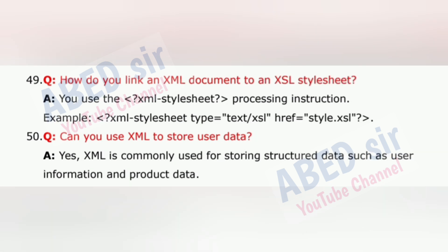Question 49: How do you link an XML document to an XSL style sheet? You use the XML stylesheet processing instruction. Example: <?xml-stylesheet type='text/xsl' href='style.xsl'?>.